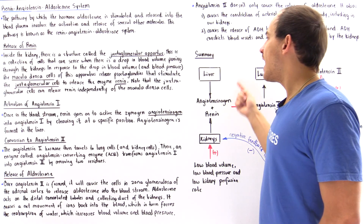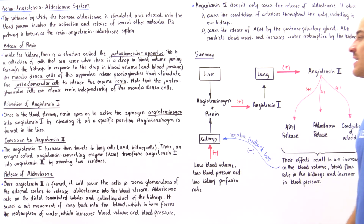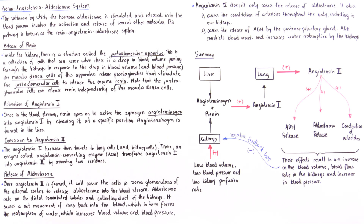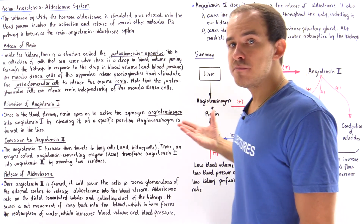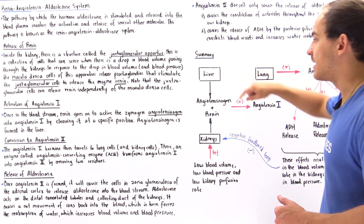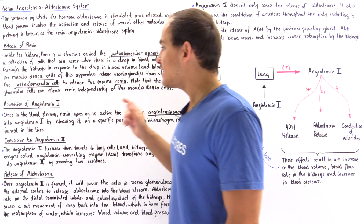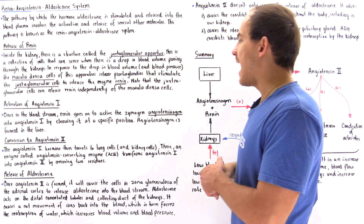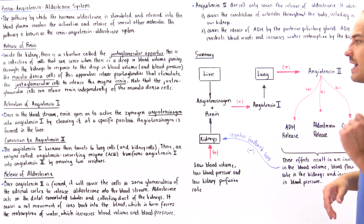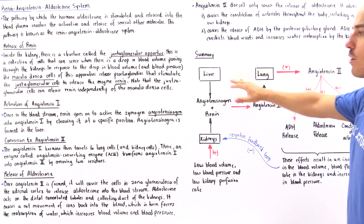At the same time, liver cells produce a zymogen enzyme known as angiotensinogen and release it into our bloodstream. When angiotensinogen mixes with renin, the renin cleaves this zymogen proteolytically at a specific location on its amino acid sequence, activating angiotensinogen into angiotensin I. Angiotensinogen is produced inside our liver cells.